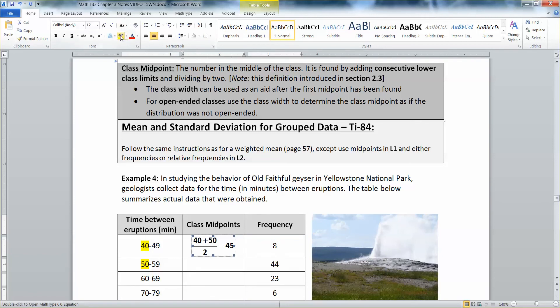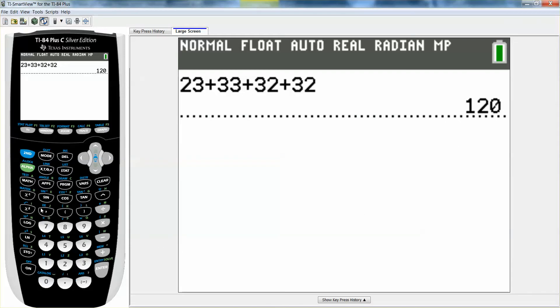If you want to see it on a calculator, parentheses, 40 plus 50, close your parentheses, divide by two, 45.